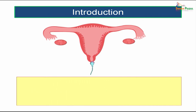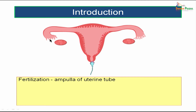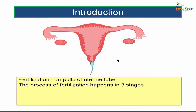Let us move on to the topic of fertilization. The site of fertilization is the ampulla of the uterine tube. The uterine tube has got mainly four parts: the interstitial part, the isthmus part, the ampulla part, and the infundibular portion. The fertilization is actually happening at the ampulla of the uterine tube.